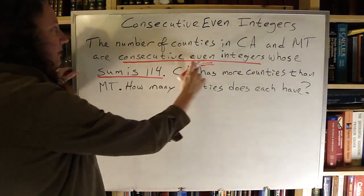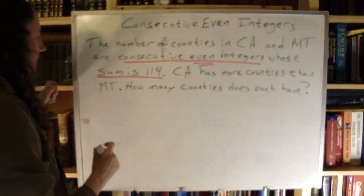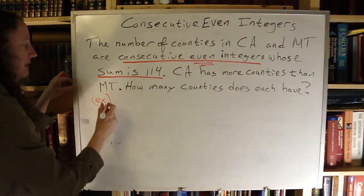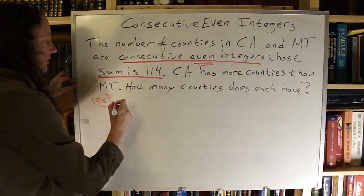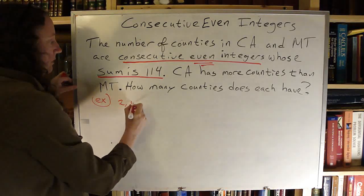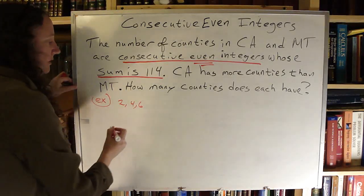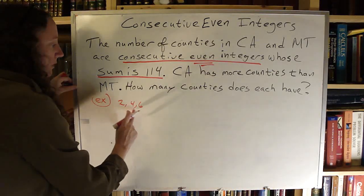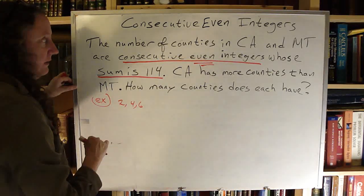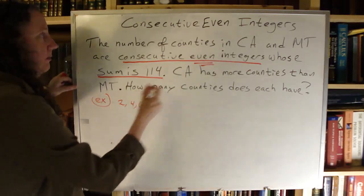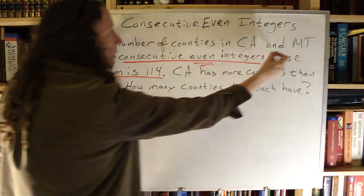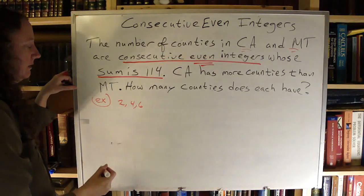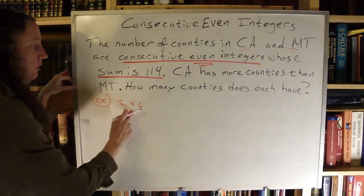So we have consecutive even integers. An example of consecutive even integers is 2, 4, and 6 — that's 3 consecutive even integers. But here we have only 2 states that we're looking at, so we need only 2 of them.